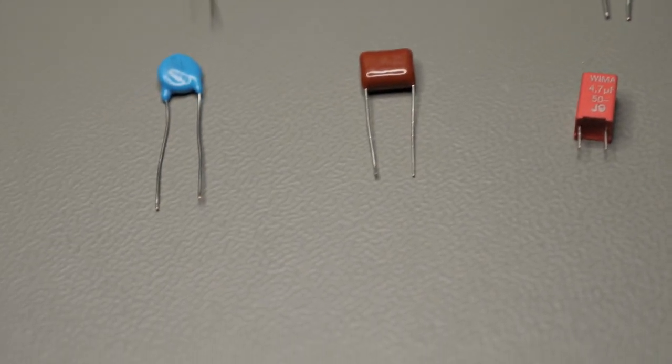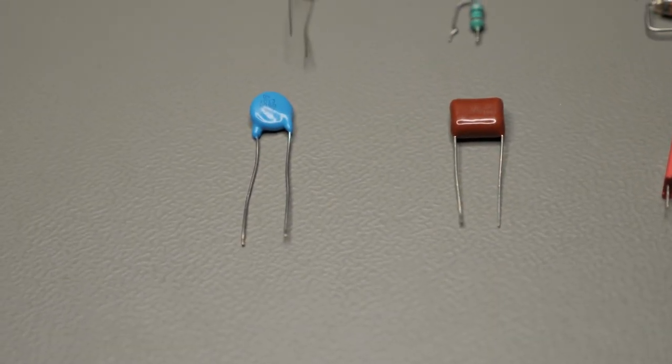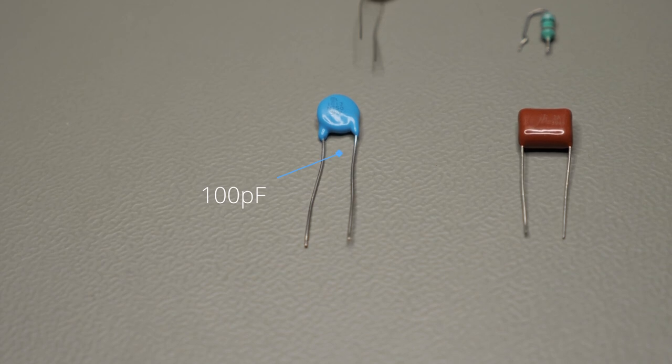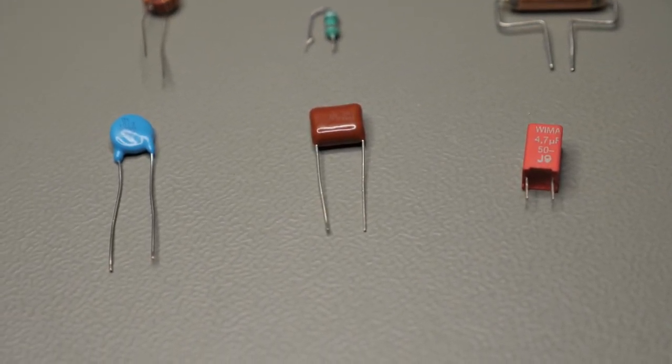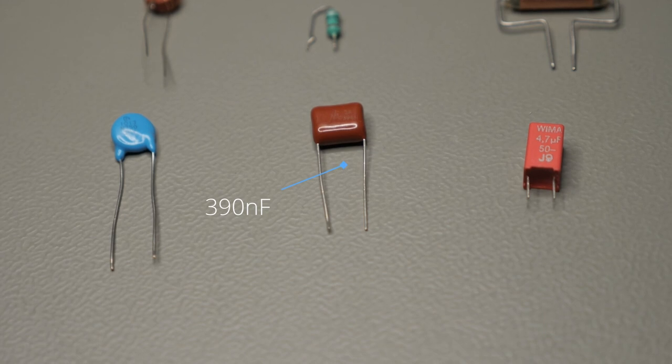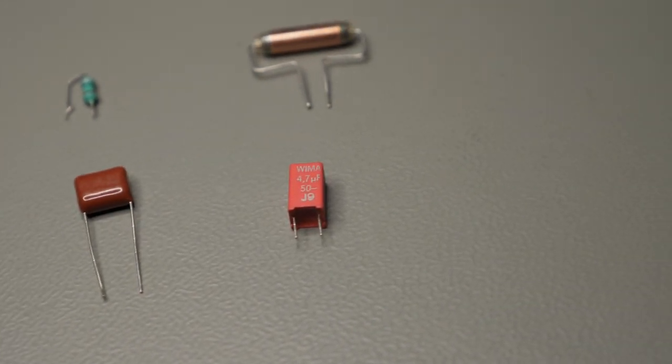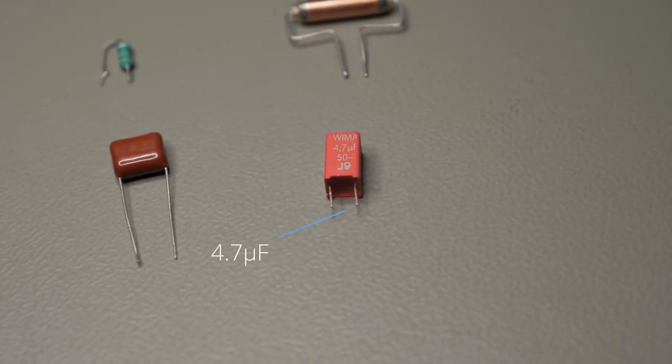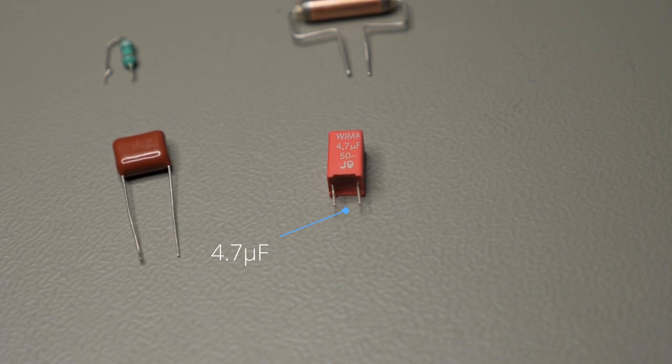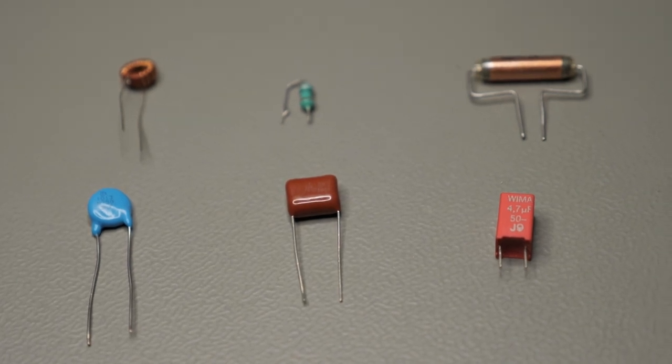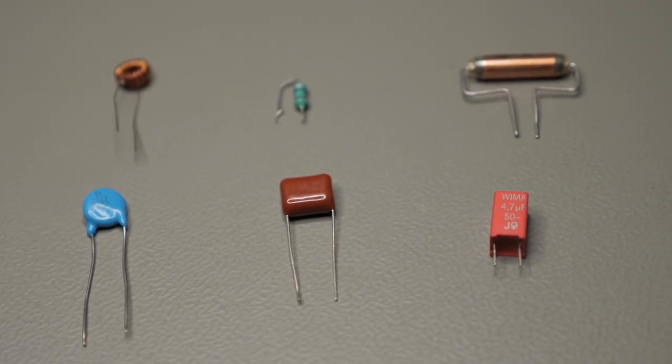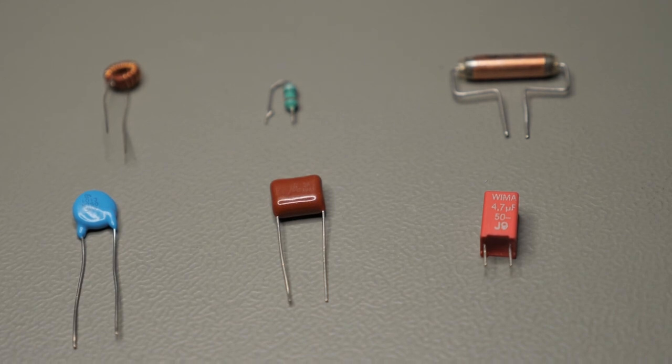Then on the bottom left we have a blue 100 picofarad capacitor. Then the brown candy in the middle is a 390 nanofarad capacitor. And on the bottom right we have a WIMA 4.7 microfarad capacitor. So let's hook them all up and see what the three tools tell us about them.